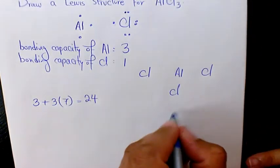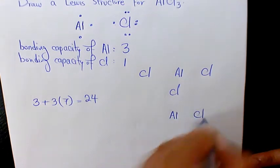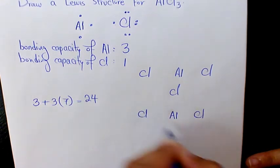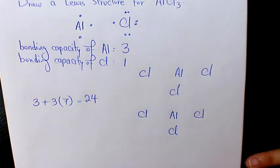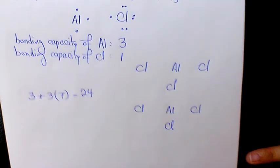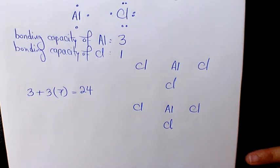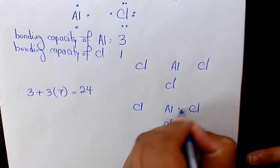Now, what we need to do, we need to place one pair of electrons between each adjacent pair of atoms, and every two of these dots represents the bonding electron pair that forms a single covalent bond.